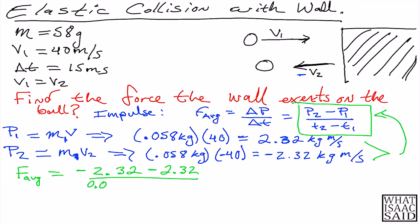That should give us minus 4.64 over 0.015 seconds. This is kilograms meters per second. Once we divide that, that should give us minus 309 Newtons. Our answer is in Newtons because we're looking for force.